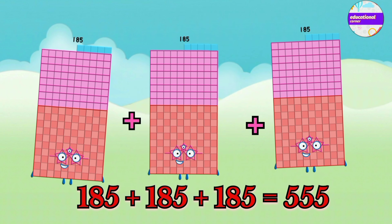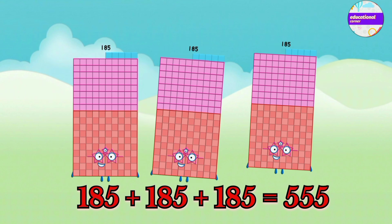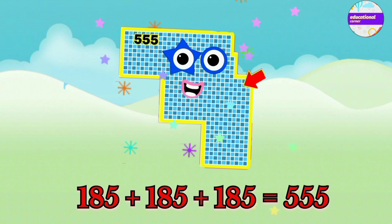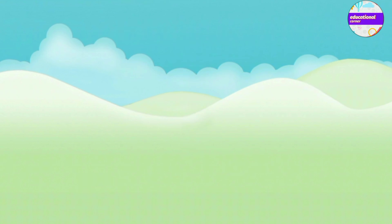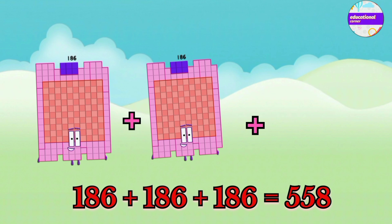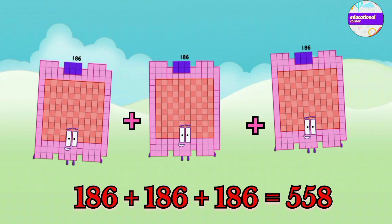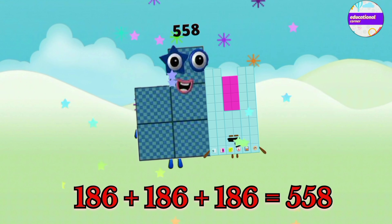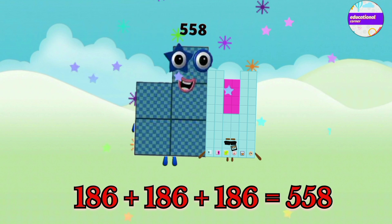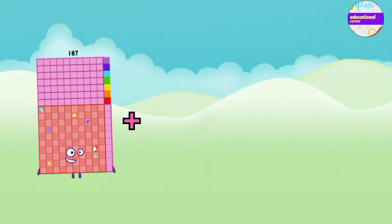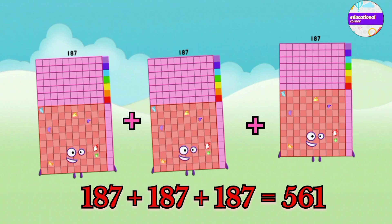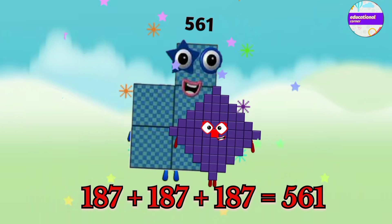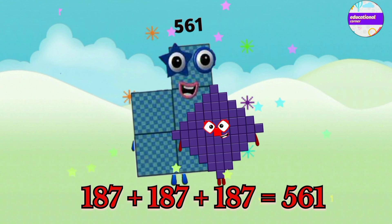185 plus 185 plus 185 equals 555. 186 plus 186 plus 186 equals 558. 187 plus 187 plus 187 equals 561.